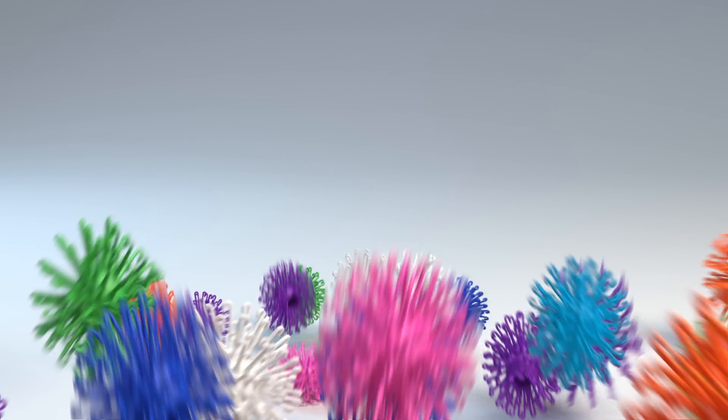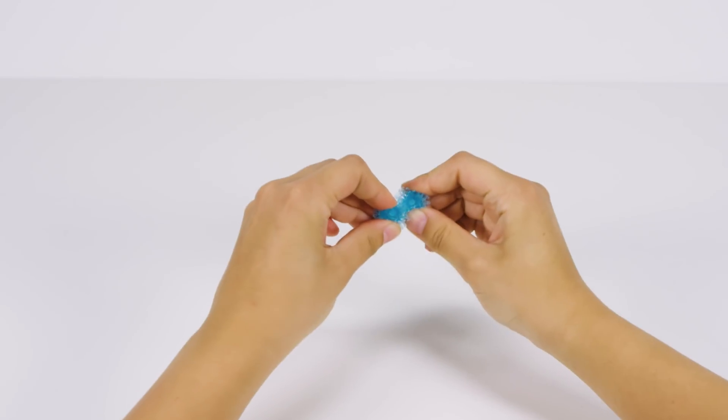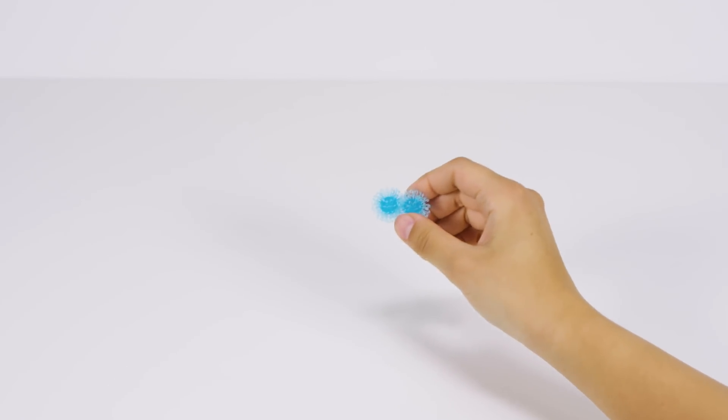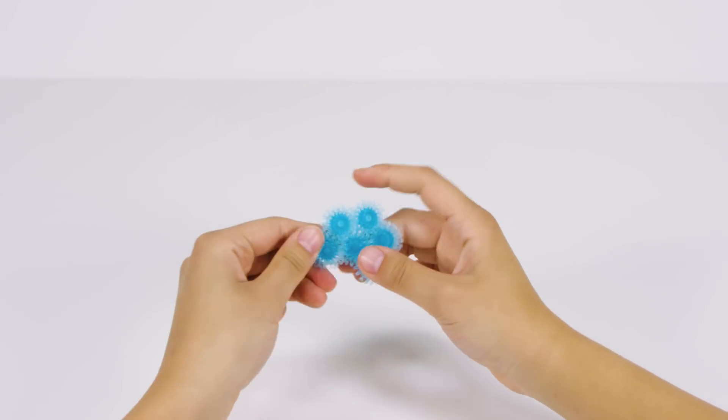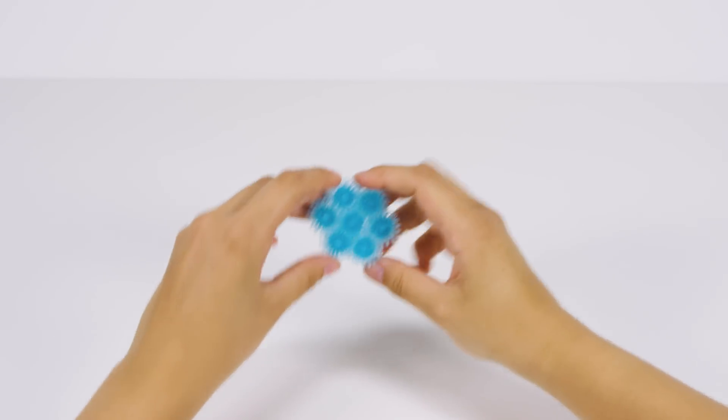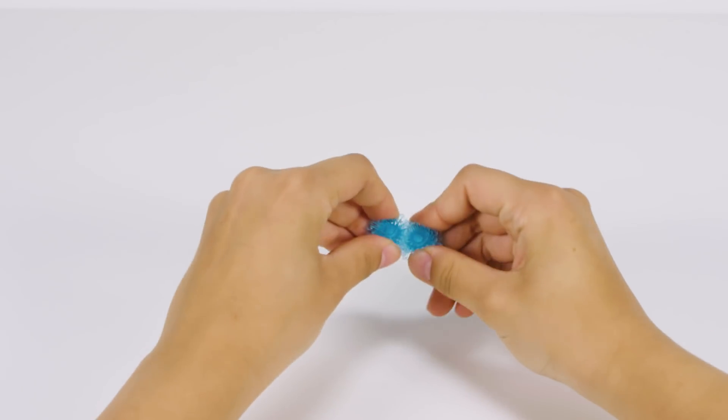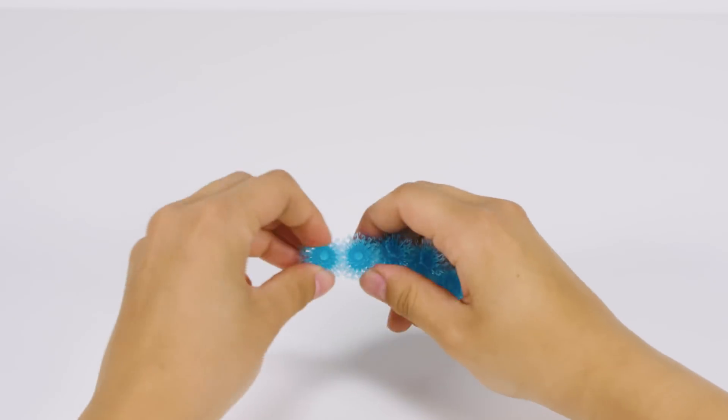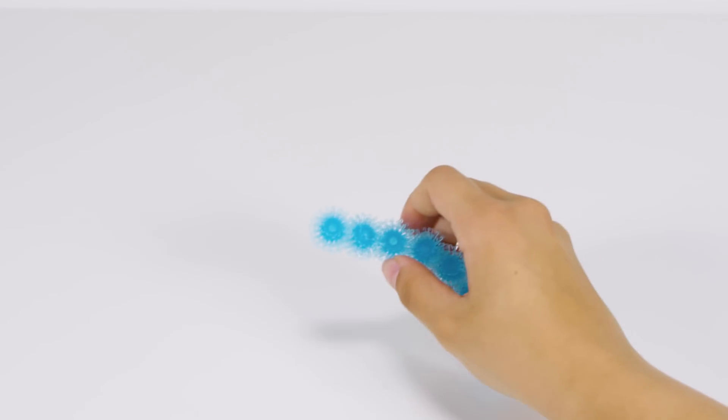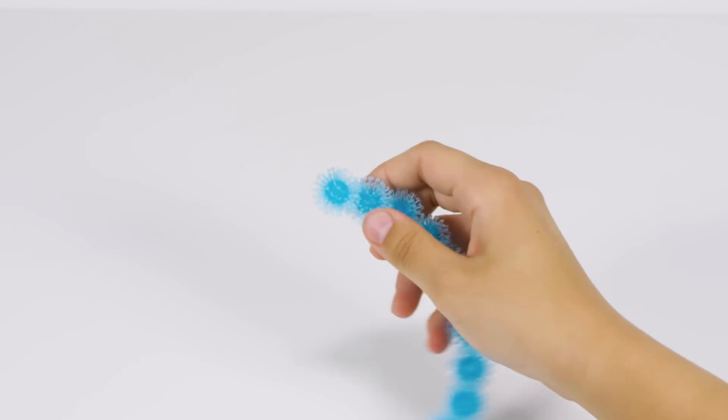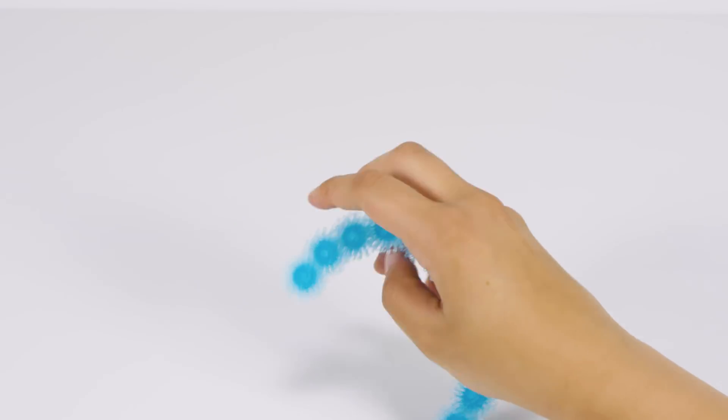Let's get started. To make the body, start by creating a flower using seven blue crystal Bunchums. Connect 12 blue crystal Bunchums and wrap around the flower.